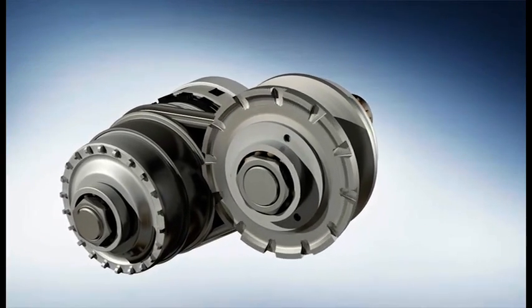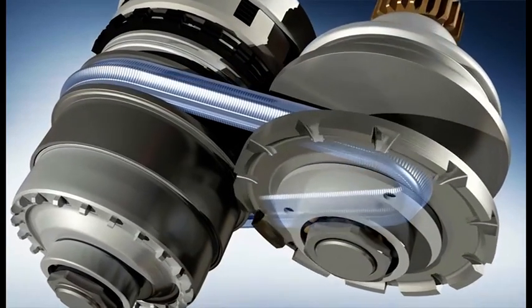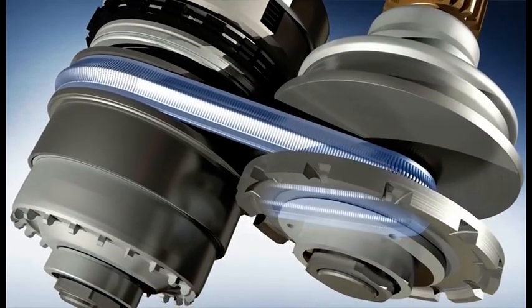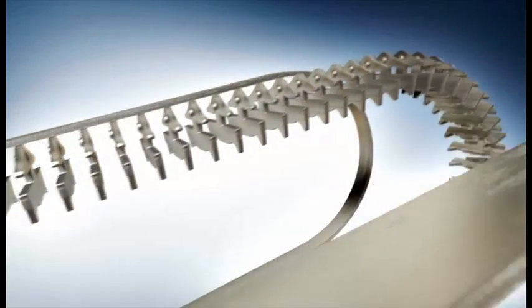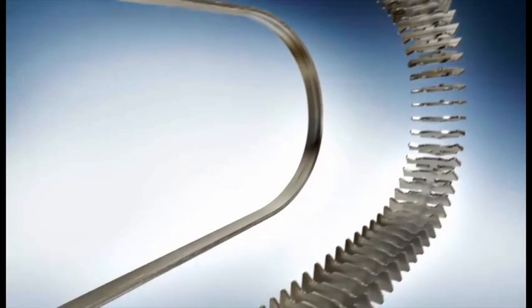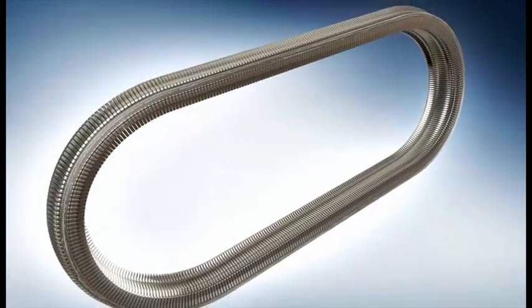The Bosch push belt is a core component of the Continuously Variable Transmission. The push belt is made of hundreds of individual specially swaged steel elements lined up and mounted along a package of high alloy steel rings.